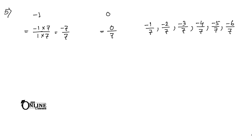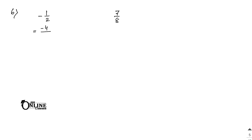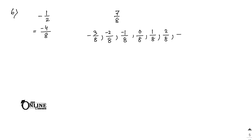Sum number 6: insert 10 rational numbers between -1/2 and 7/8. Multiply -1/2 by 4/4 to get -4/8. Now between -4/8 and 7/8, the 10 rational numbers are: -3/8, -2/8, -1/8, 0/8, 1/8, 2/8, 3/8, 4/8, 5/8, and 6/8.